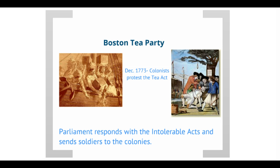When word got back to London about this destruction of private property of a company — the British East India Company — they were quite upset and passed the Intolerable Acts to really send a very strong message to the Massachusetts colonists in particular, and all of the colonists in general, that Parliament would regain control of this.